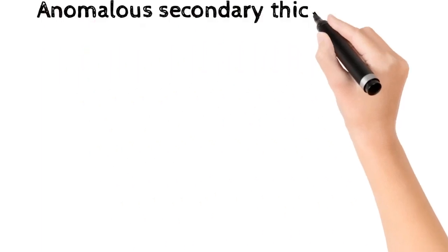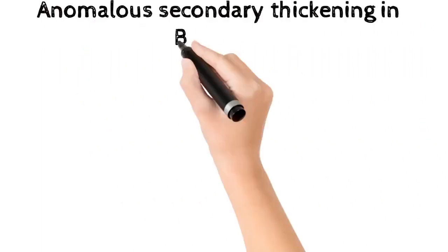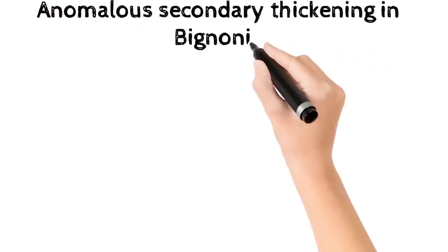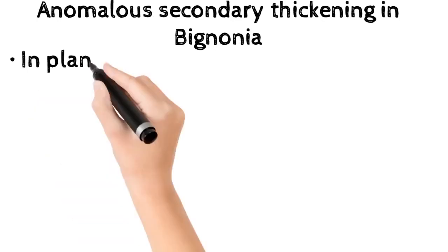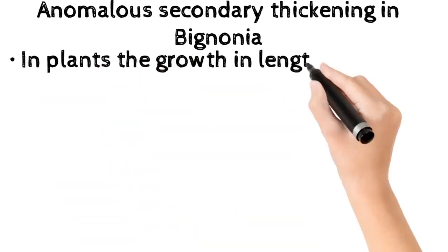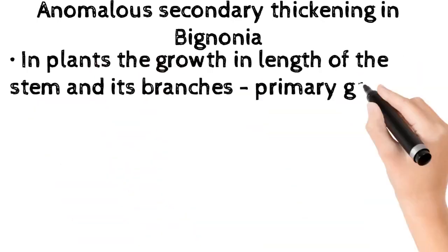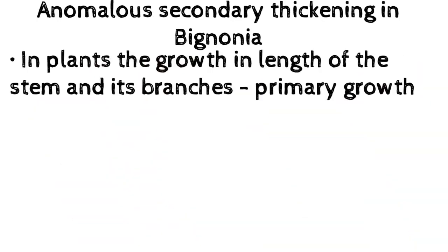Please comment your experience on writing this essay after watching our video and also send us your suggestions as per your needs. Anomalous secondary thickening in Bignonia: plants show growth in length of the stem and its branches.